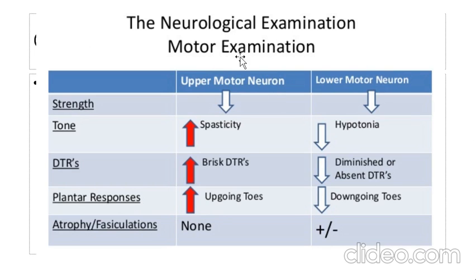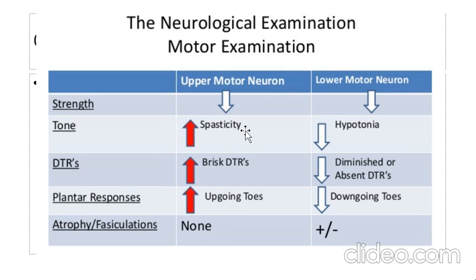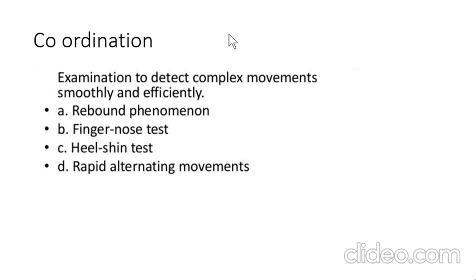In neurological motor examination, comparing upper motor neuron and lower motor neuron lesions: in lower motor neuron lesion, the muscle is flaccid, all reflexes are lost, there is hypotonia, and muscle atrophy occurs. In upper motor neuron lesion, there is spasticity, deep tendon reflexes are hyperactive, and there is no muscle atrophy.